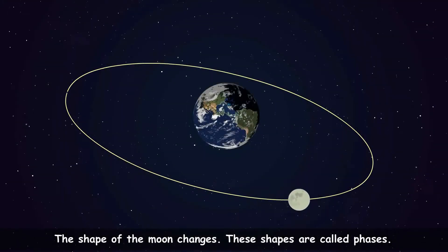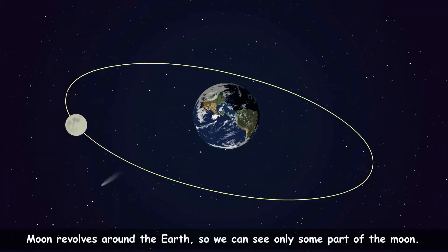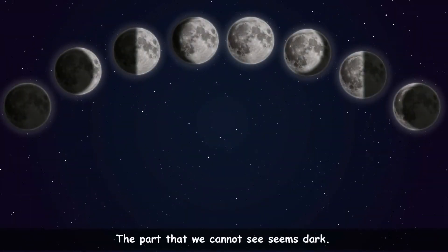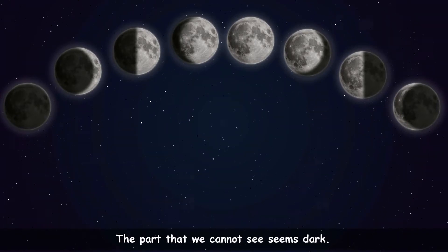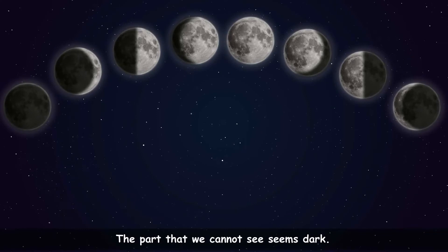As the moon orbits the earth, the phase changes. As you know, the moon revolves around the earth, so we can see only some part of the moon. The part that we cannot see seems dark. Thus, the moon appears to change its shape every day.